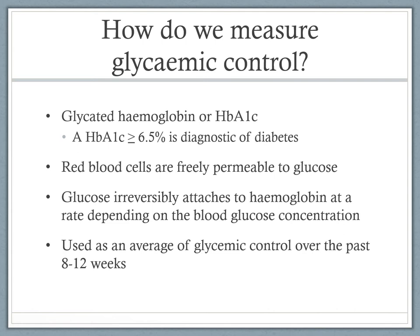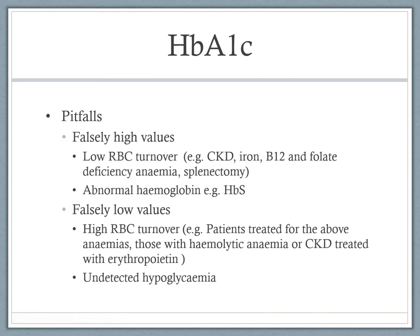Understanding HbA1c helps us recognise its pitfalls — we can get either falsely high or falsely low values. Falsely high values occur in states of slow red blood cell turnover, for example in chronic kidney disease, B12 or folate deficiency anemias, splenectomies, or patients with abnormal hemoglobin types. Falsely low values occur in the opposite scenario with high red blood cell turnover — patients treated for the anemias listed, hemolytic anemias, or CKD treated with erythropoietin. Undetected hypoglycemia is also important to recognise in patients recording higher BGLs during the day but with a lower-than-expected HbA1c, necessitating exclusion of overnight hypoglycemic events and checking glucometer function.